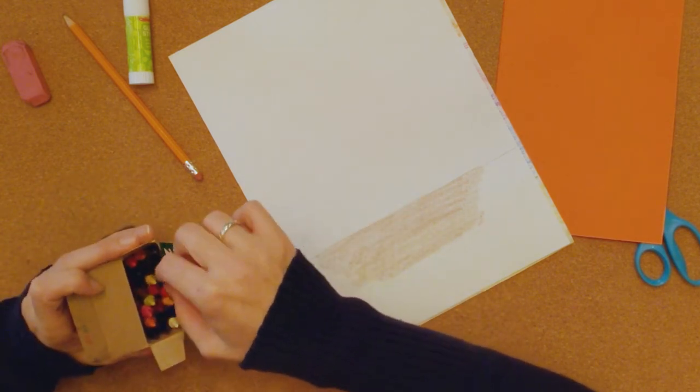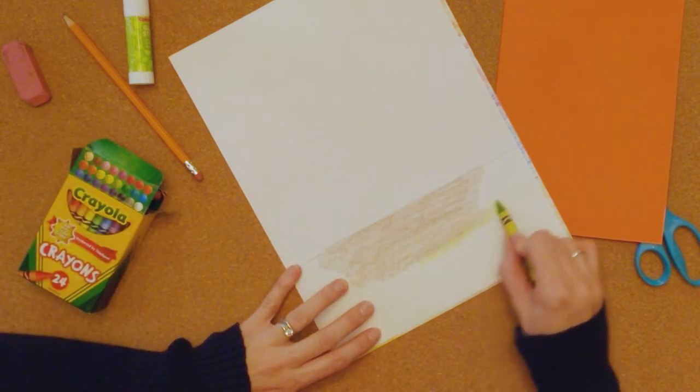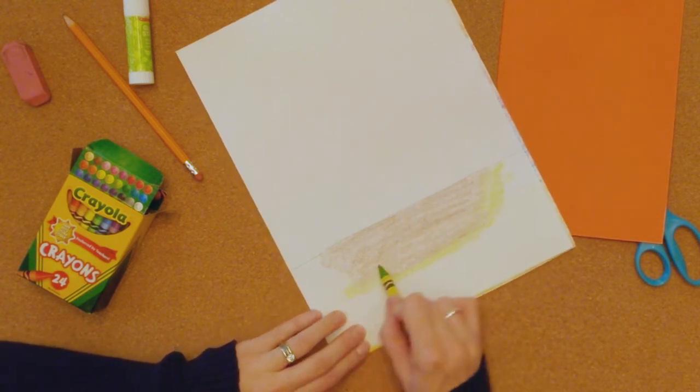Then I'm going to take this light green. Like I said, I'm okay if you do it all brown or all green. But just underneath that line that we drew, we're going to color it in.